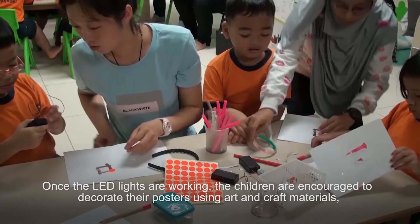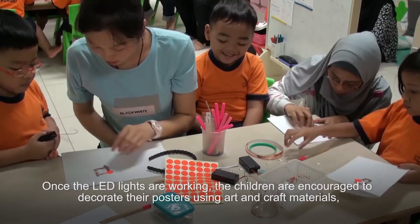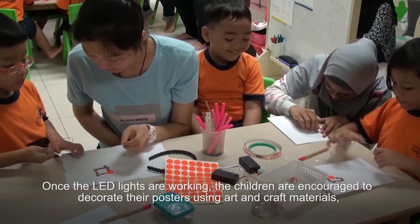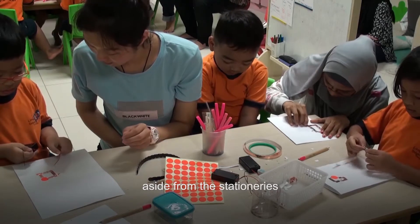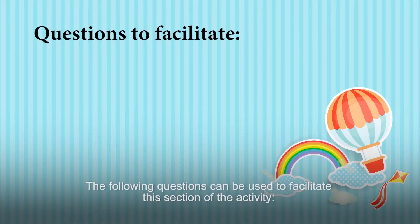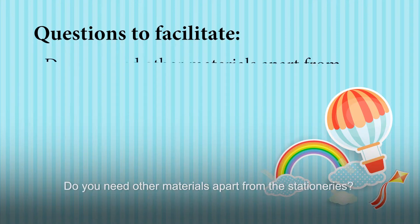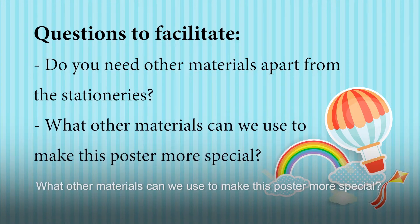Once the LED lights are working, the children are encouraged to decorate their posters using art and craft materials, aside from the stationeries. The following questions can be used to facilitate this section of the activity: Do you need other materials apart from the stationeries? What other materials can we use to make this poster more special?